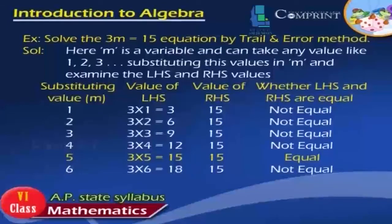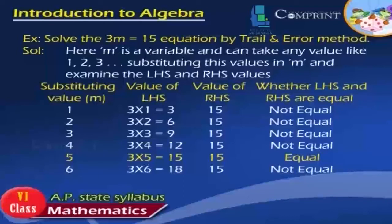When substituting m = 1: LHS = 3×1 = 3, RHS = 15. LHS and RHS are not equal. When substituting m = 2: LHS = 3×2 = 6, RHS = 15. LHS and RHS are not equal. When substituting m = 3: LHS = 3×3 = 9, RHS = 15. LHS and RHS are not equal.